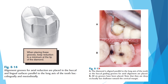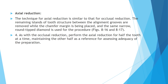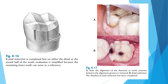Gingivally, the resulting depth of the alignment groove should be no more than one-half the width of the tip of the diamond. The alignment grooves determine the path of placement of the restoration. Grooves are placed on the buccal and lingual surfaces and then that tooth structure is reduced. As with the occlusal reduction, perform axial reduction for half the tooth at a time, maintaining the other half for reference.